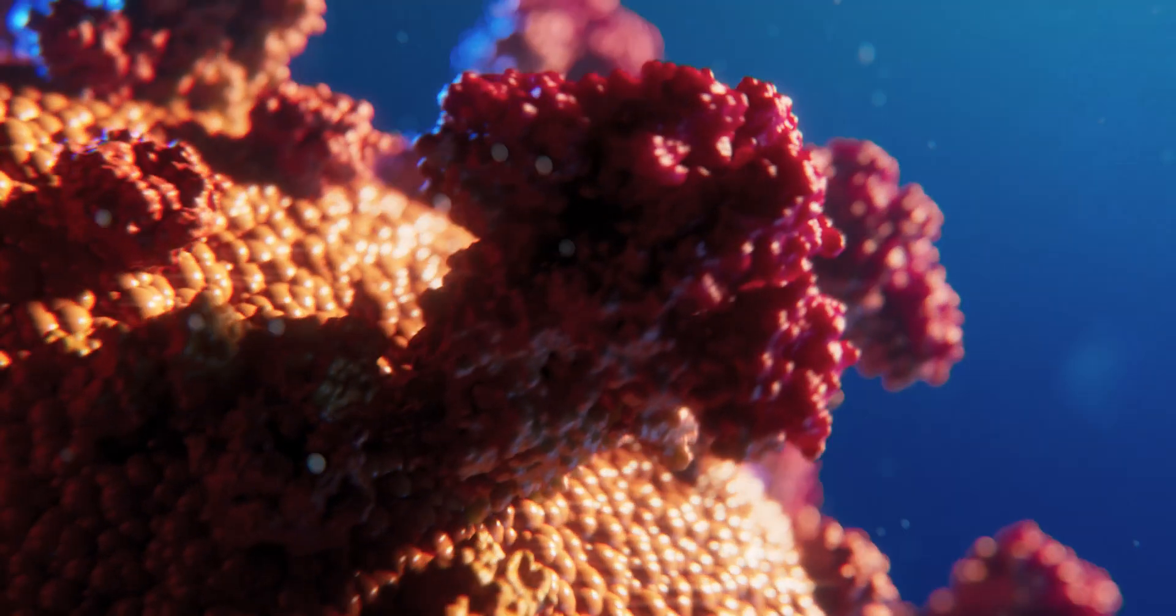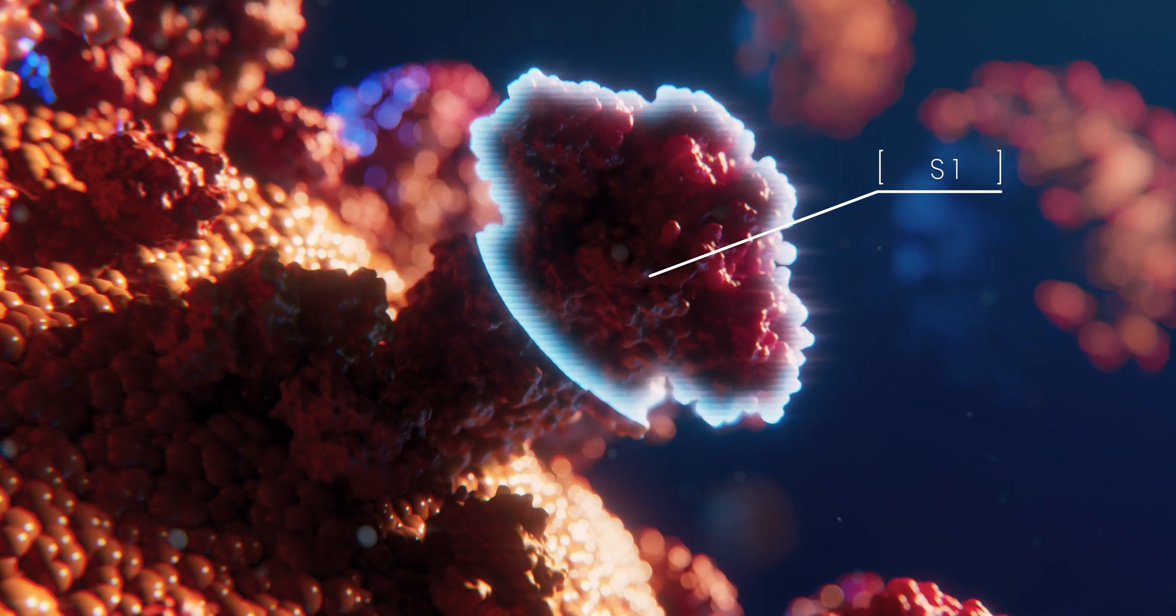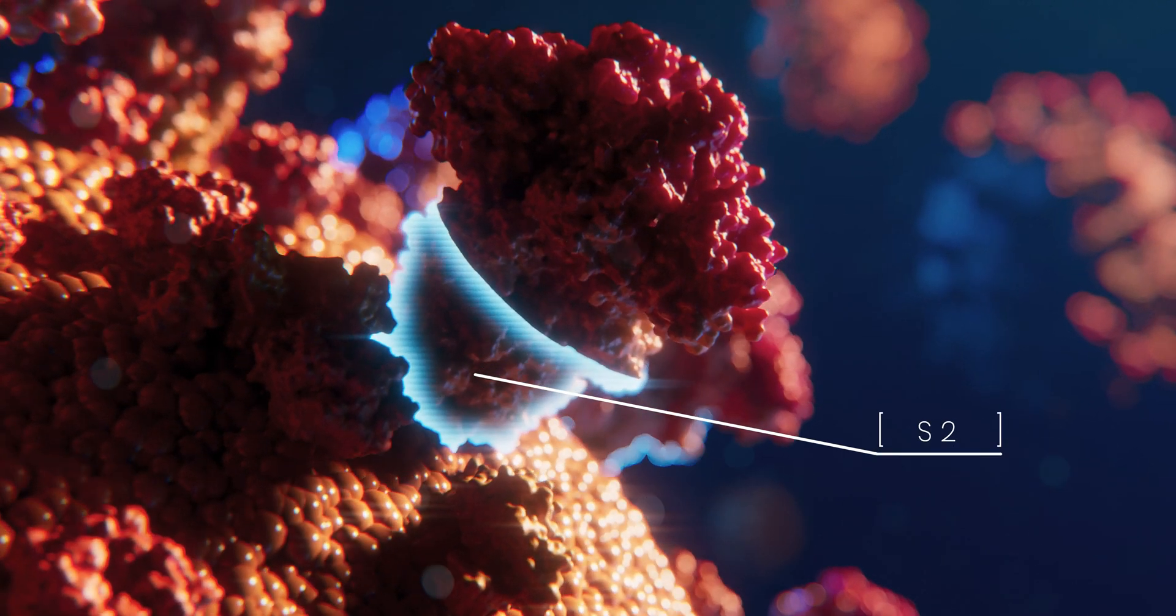Each individual protein consists of two parts: a globular head, called S1, and a stalk-like structure, called S2.